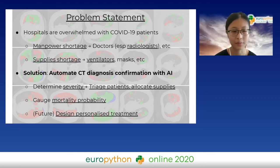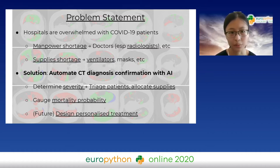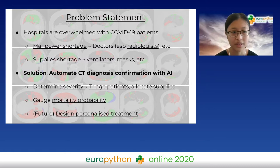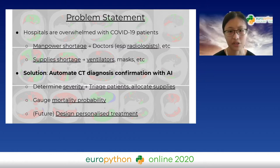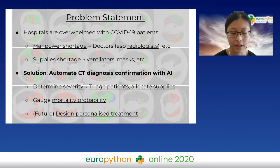Here's my problem statement — how I would like to help with the problem. Hospitals all around the world are overwhelmed with COVID-19 patients, and there aren't enough doctors nor equipment to go around. There is a manpower shortage: not enough doctors to attend to all of the patients and all of the CT image scans, mostly because radiologists are the most knowledgeable about these scans and there aren't a lot of them. There is also a supply shortage, as ventilators need to be reserved for the most vulnerable.